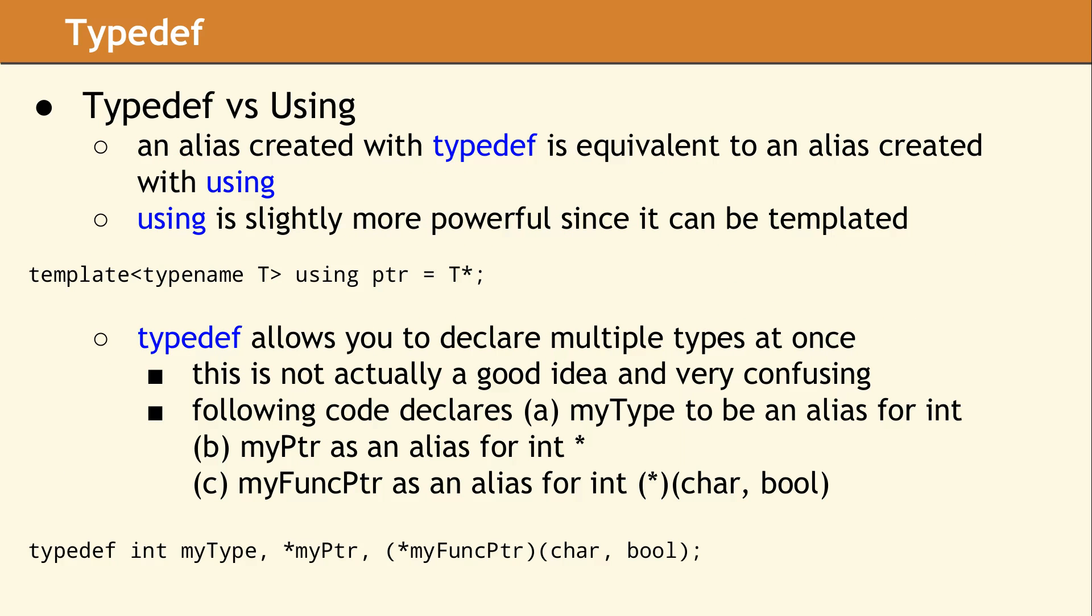As we just mentioned, the semantics of a typedef are the same as the using type alias. However, the using keyword has the ability to declare a templated type alias, whereas typedef cannot do this. The syntax for a templated type alias is just like any other template, where the template parameters appear before the declaration.